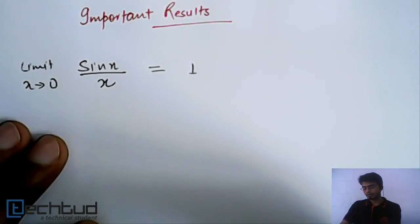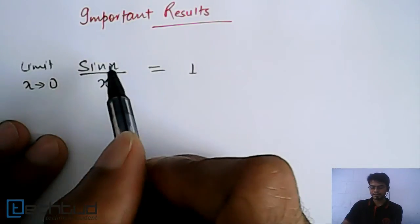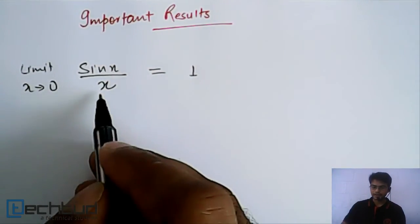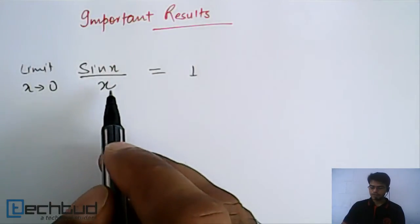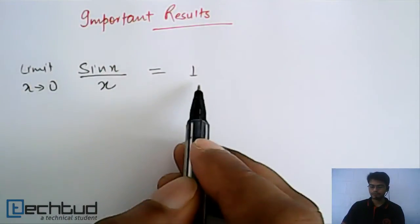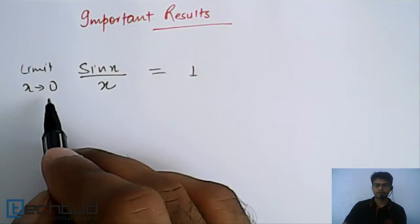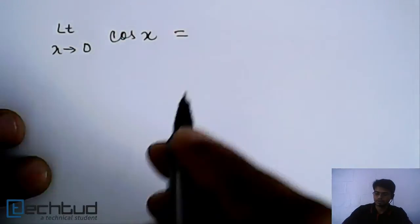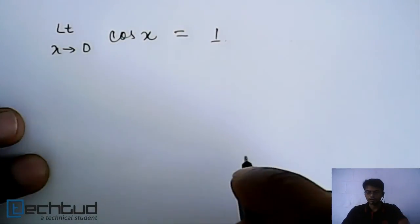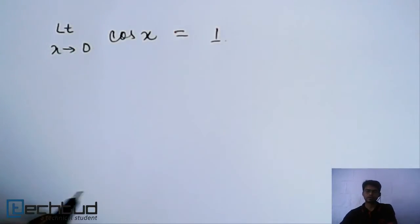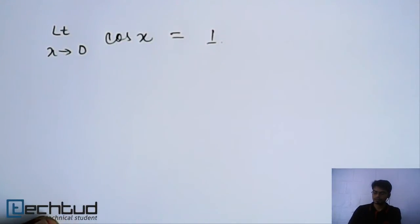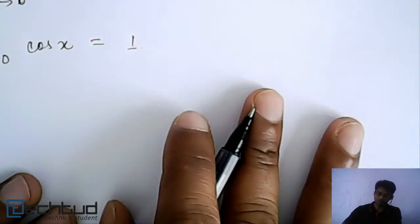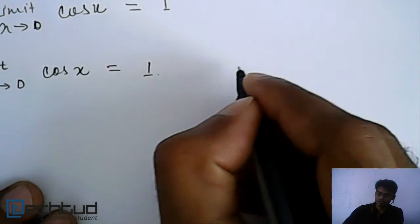To find this value, you can expand sin(x) using the formulas we just discussed and then divide by x. Doing this, you get the value equal to 1 when the limit tends to zero. The next result is: limit as x tends to zero of cos(x), which is again equal to 1. All these can be verified by expanding using the important formulas we discussed.